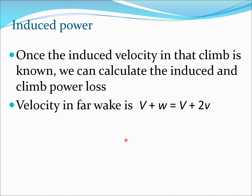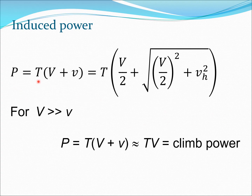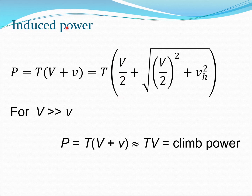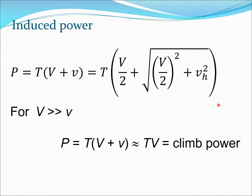Once you have calculated the induced velocity in climb, you can calculate the induced climb power loss. The velocity in the far wake is V + w = V + 2v, and the induced power is thrust times the velocity through the rotor disk, T(V + v). Substituting the expression for v, the −V/2 term becomes +V/2. Using this expression, if climb velocity is, say, 2 m/s, you put that in, calculate v_h, set T equal to weight, and calculate the climb power.